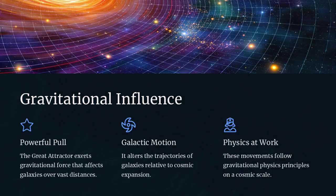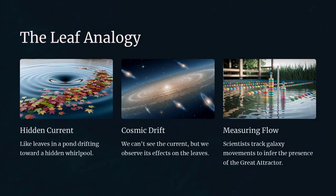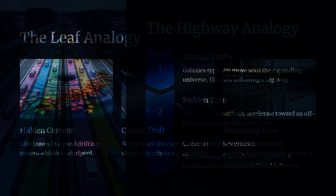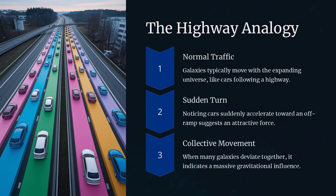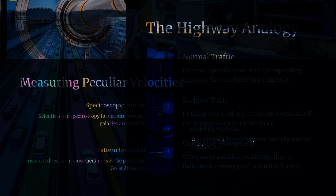How do we know something so massive is out there? Astronomers have mapped the motions of thousands of galaxies and noticed that they all seem to be moving in a similar direction, as if being attracted to a common, hidden source of gravity.